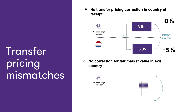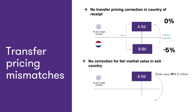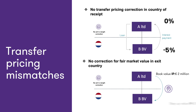In the second example, A Limited transfers IP to the Dutch BV. The IP has a book value of 2 million euros and a fair market value of 5 million euros. Based on Dutch tax law, a step-up will be provided to the BV for the fair market value, and the BV can amortize the IP taking into account the higher fair market value. Country A, however, does not levy an exit tax for the difference between the fair market value and the book value.